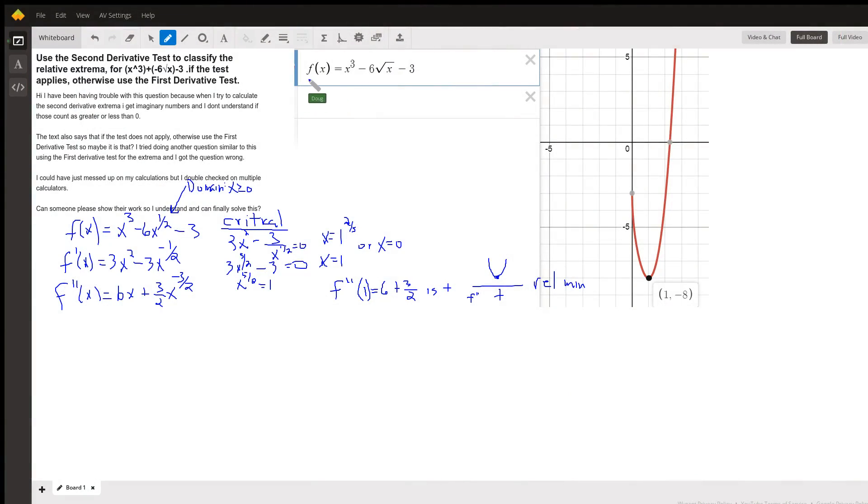Okay, here's a graph of the original function. It looks like we're headed towards the idea that there's a relative minimum when x is 1. Here's the graph, and the question is how do we arrive at that using the second derivative test?